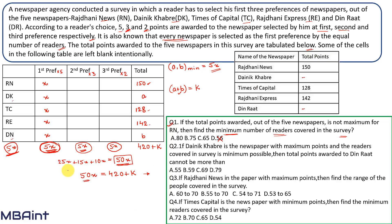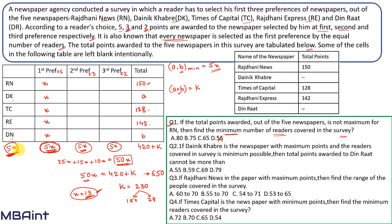Trying the next multiple: 50X = 650 gives X = 13 and k = 230. If a = 151 (DK maximum), then b = 79. The minimum value of b is 5X = 65, and 79 ≥ 65, so this satisfies the condition. Therefore X = 13, and the minimum number of people surveyed is 5X = 65. The answer is C.